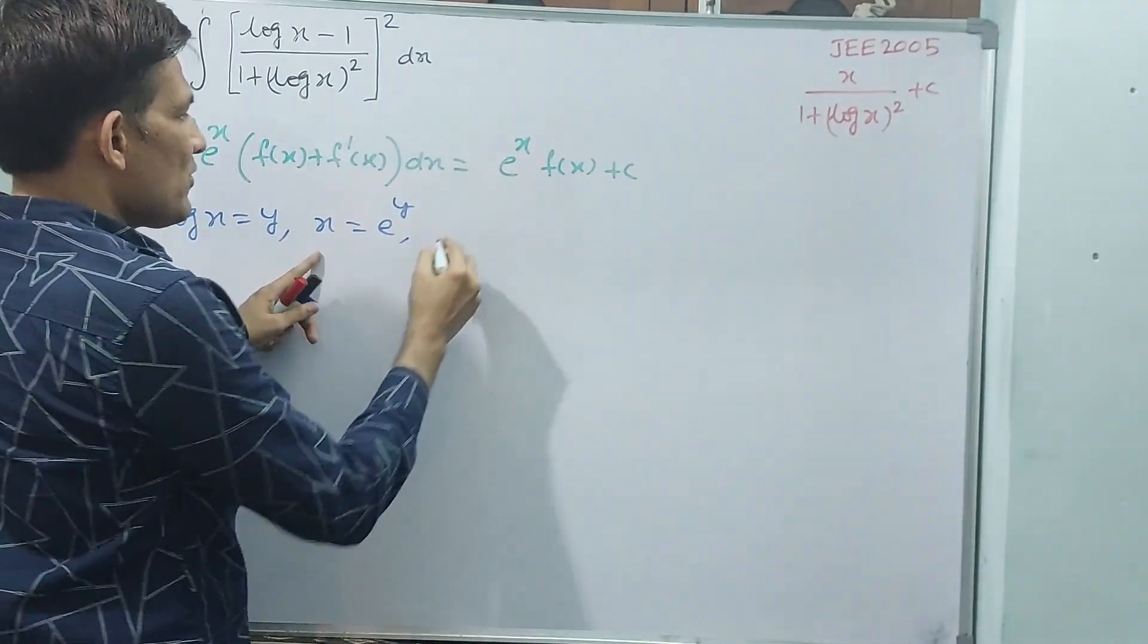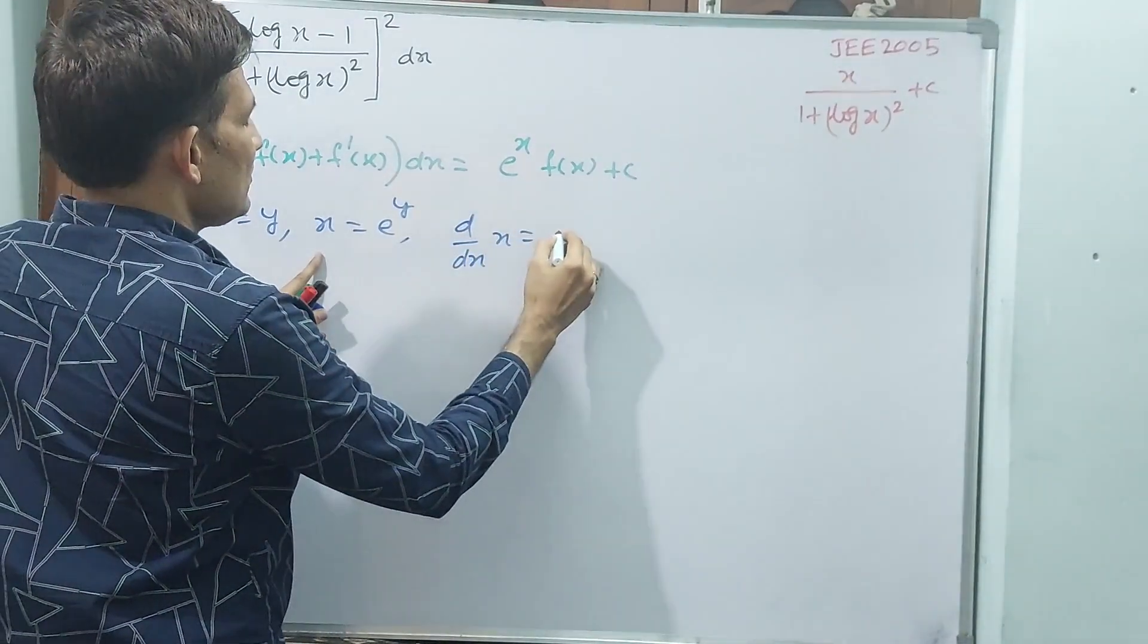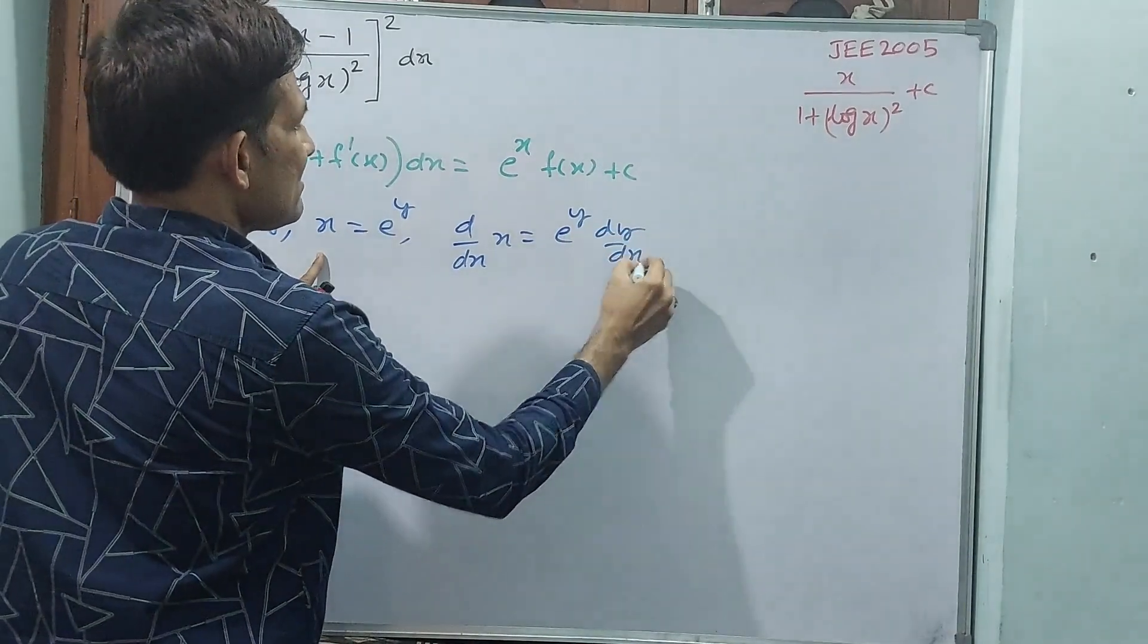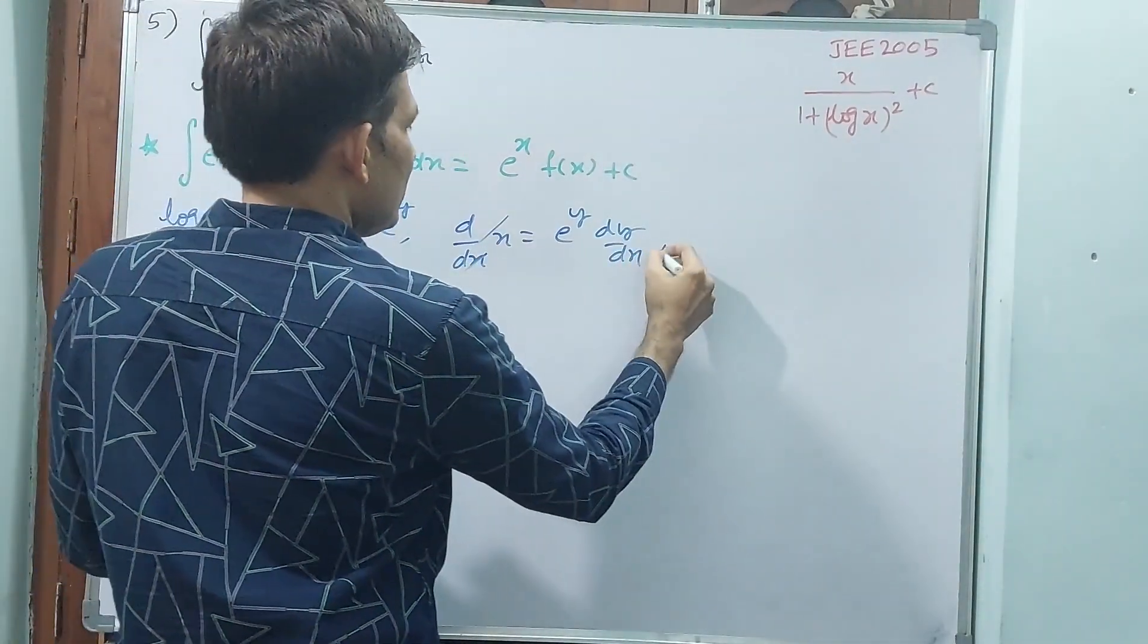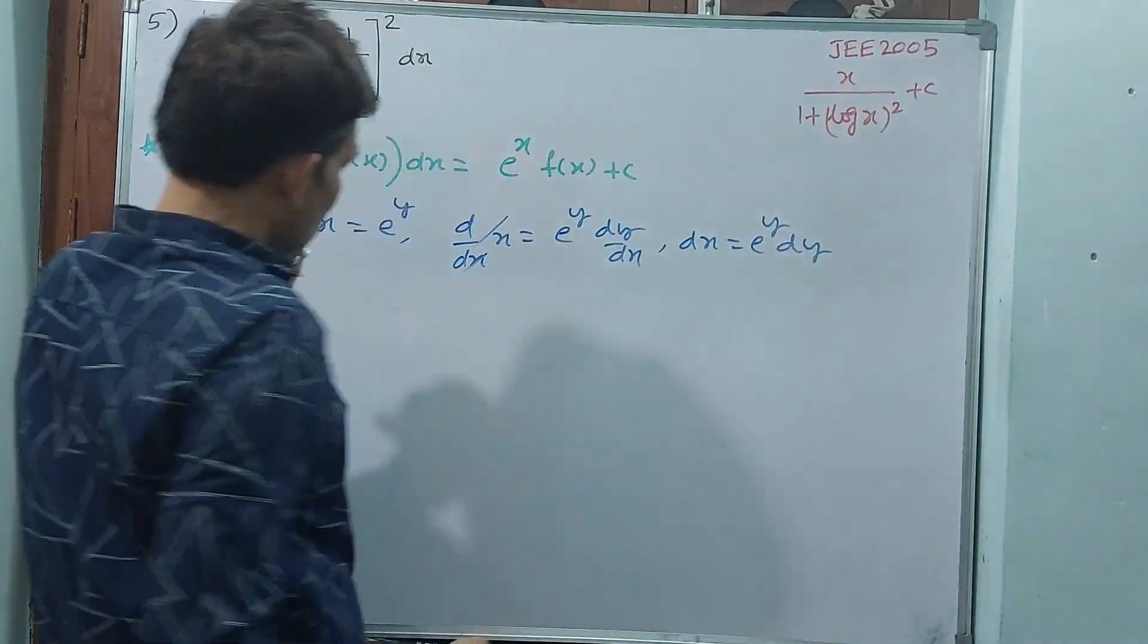Both sides if I do differentiation with x, d by dx of x is equal to d by dx of e power y into dy by dx. This is going to get cancellation and dx is equal to e power y dy.